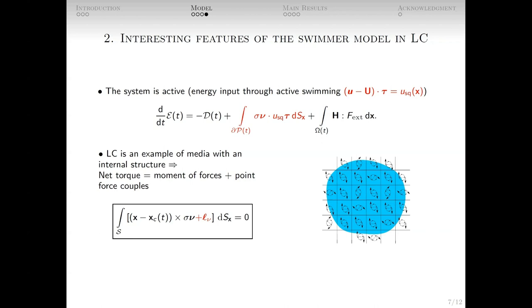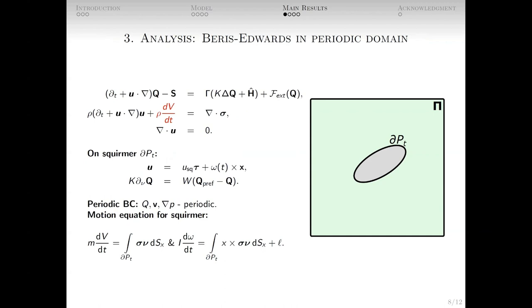We consider our model in the frame moving with the same velocity as the swimmer. Rewriting the equation results in adding only one term in the Navier-Stokes equation, highlighted here. All PDEs, boundary conditions, force and torque balances remain the same.